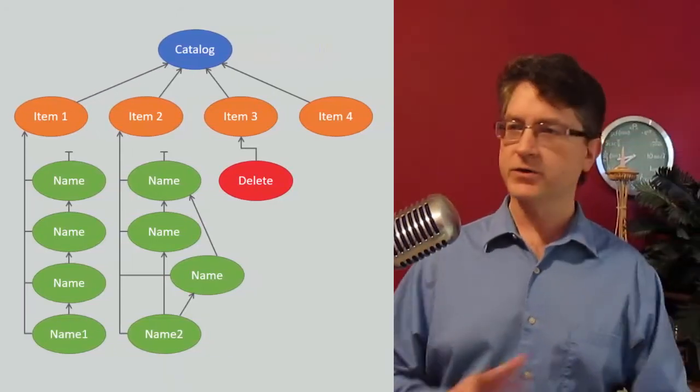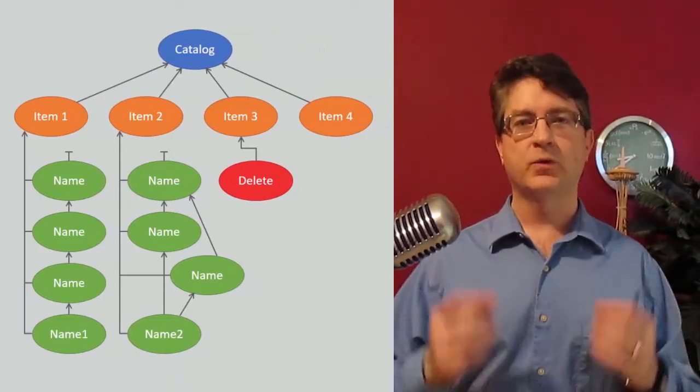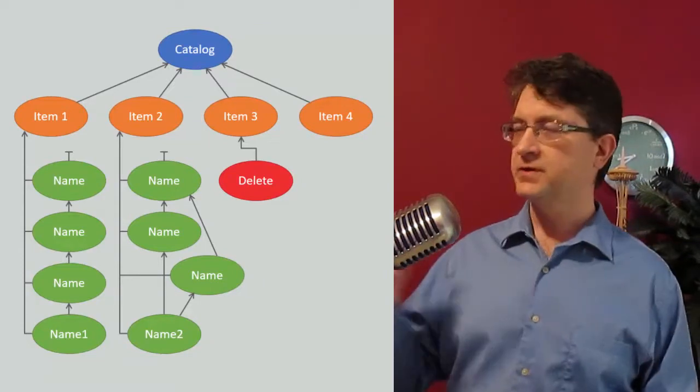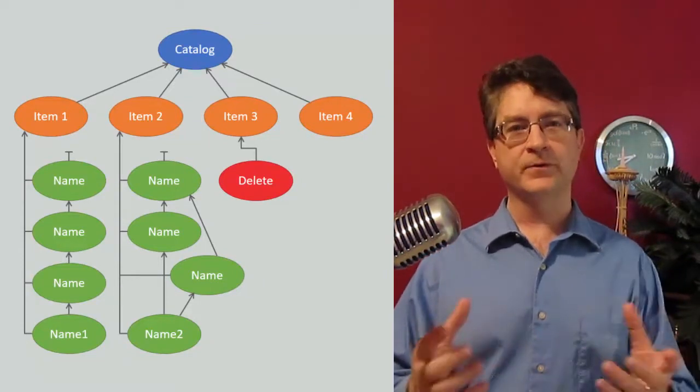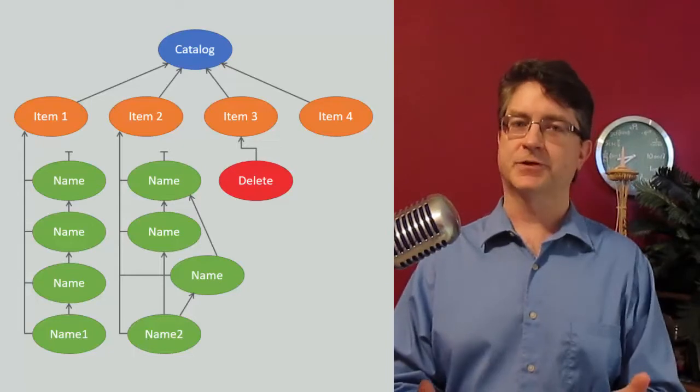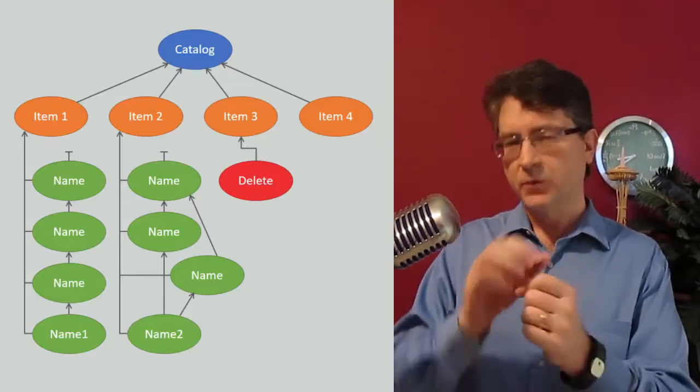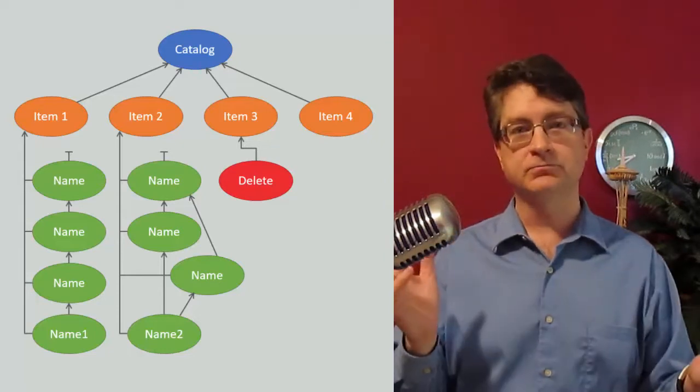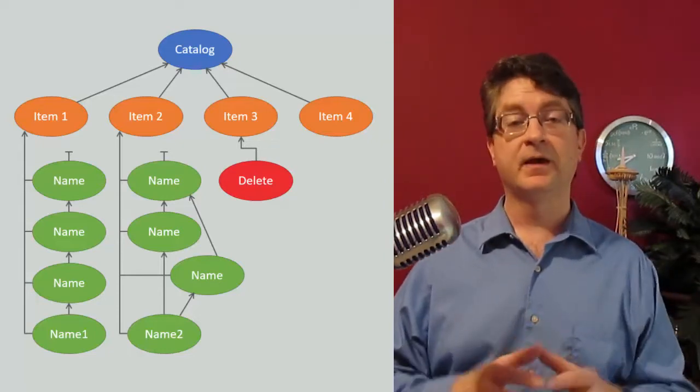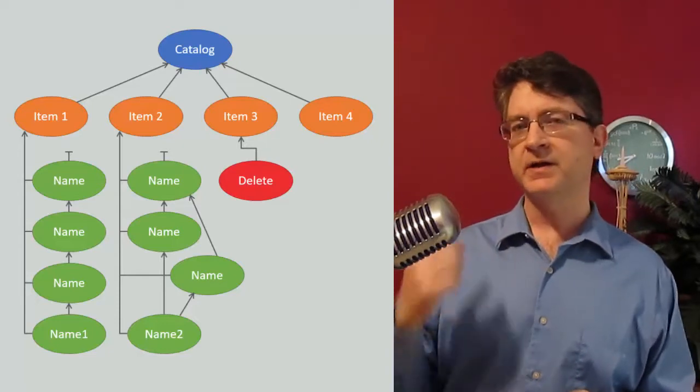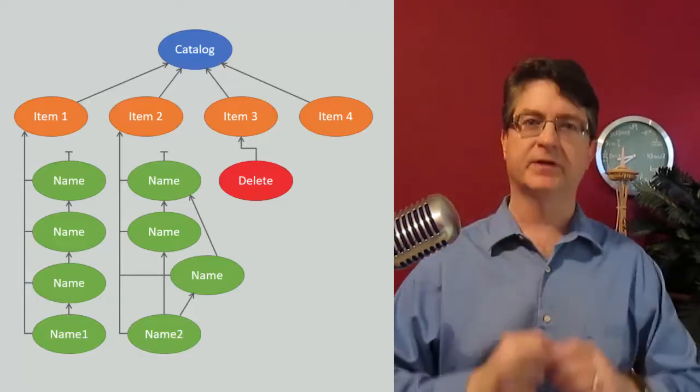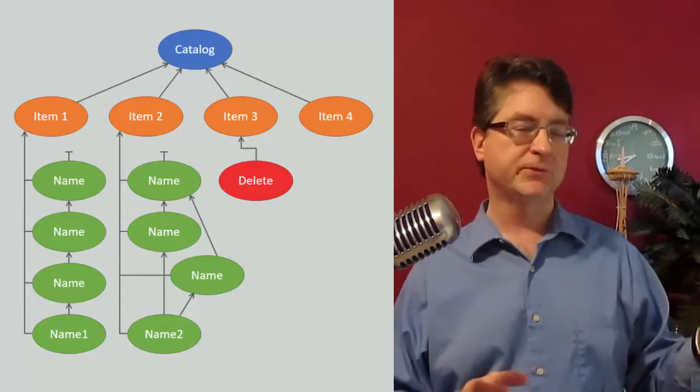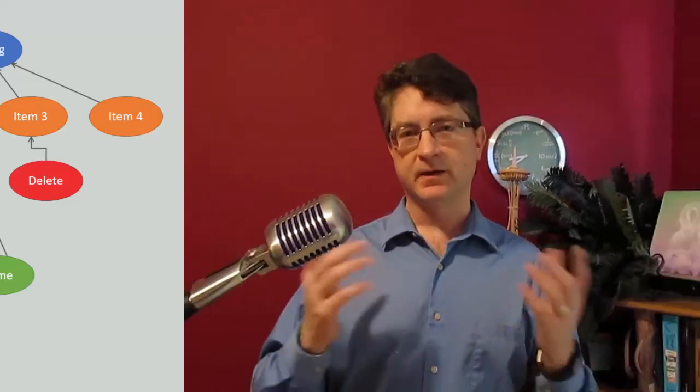In fact, this strategy works for all the verbs. Whenever we put a new version of a mutable property, we first check to see, do we already have that version? Do we already have a record with those same predecessors and that same value? If so, do nothing. And also, DELETE. Have we already issued a delete for this particular fact? If so, do nothing.